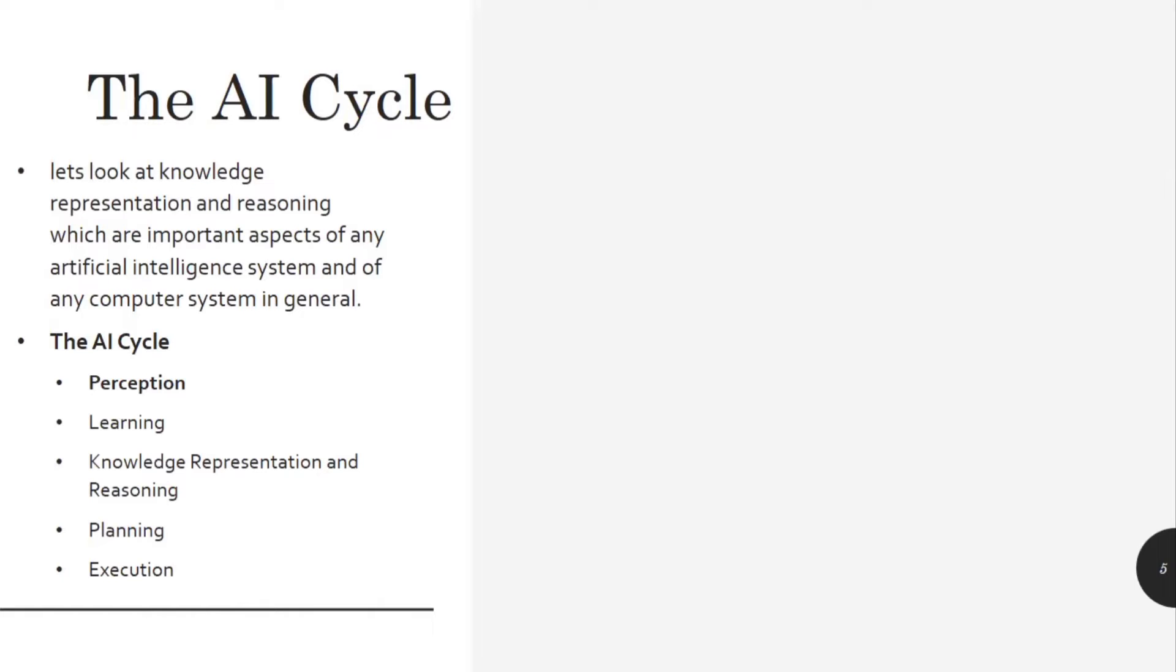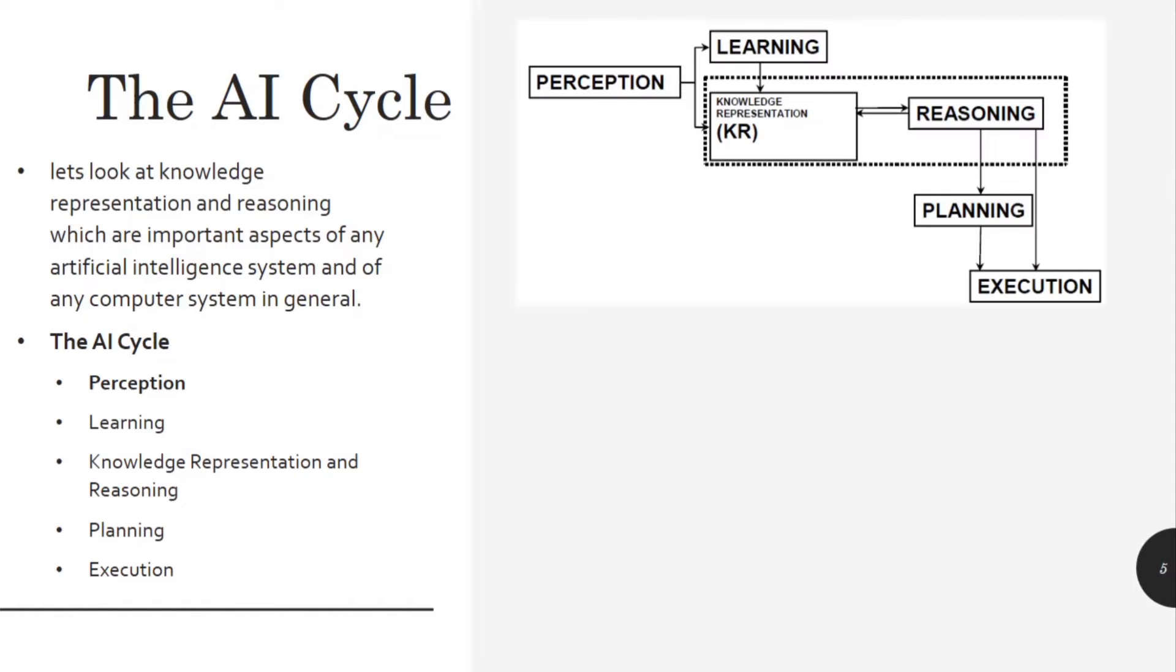Now I'm going to discuss the AI cycle, that is the topic of my today's lecture. Let's look at knowledge representation and reasoning which are important aspects of any artificial intelligence system and of any computer system in general. If you look here, there are different steps starting from perception, then learning, then knowledge representation and then reasoning. Knowledge representation and reasoning are interconnected with each other. After this learning step comes and then the execution. This diagram is showing how an artificial intelligence system can interact with the real world and what components help it to show intelligence.